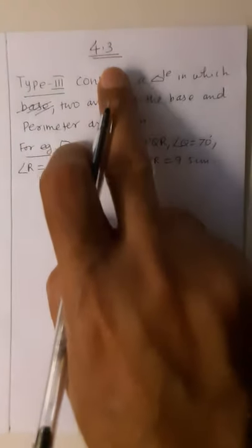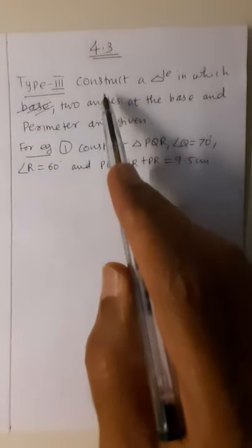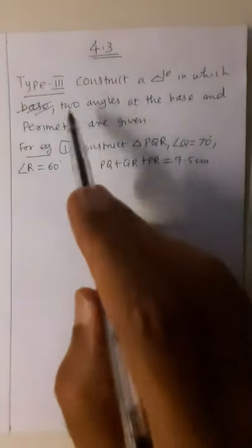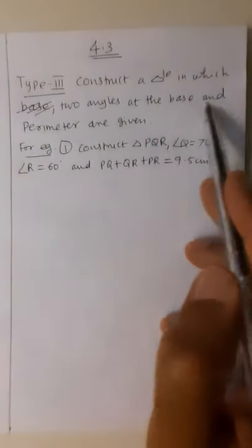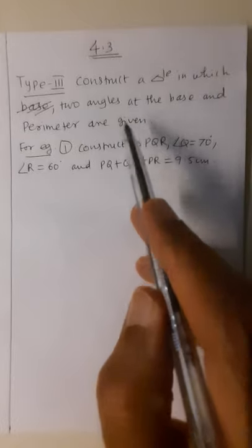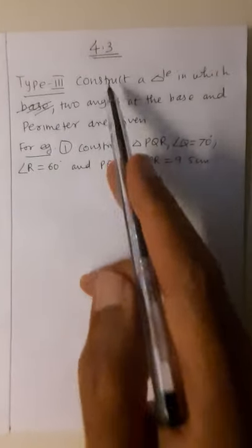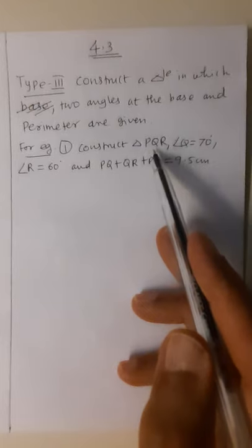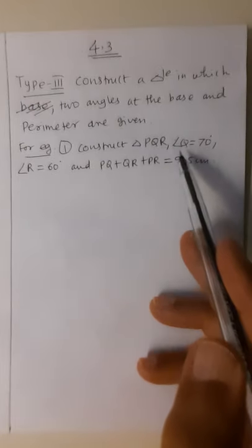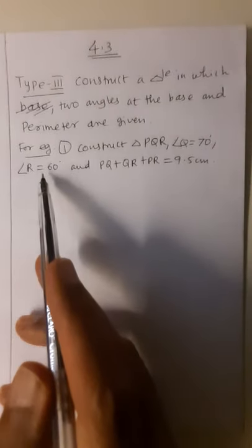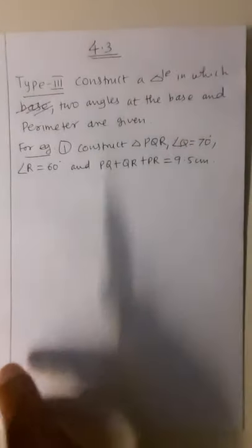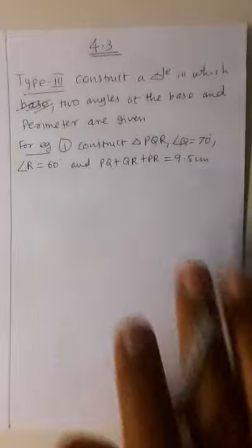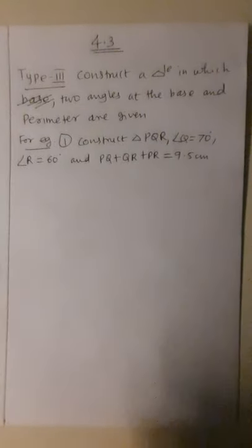In Practice Set 4.3 we have to construct a triangle where two angles at the base and the perimeter are given — the base is not given. The first example: construct triangle PQR where angle Q is 70 degrees, angle R is 60 degrees, and the perimeter of the triangle is 9.5 centimeter.